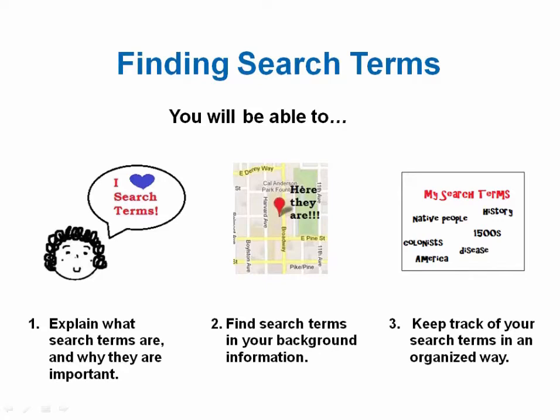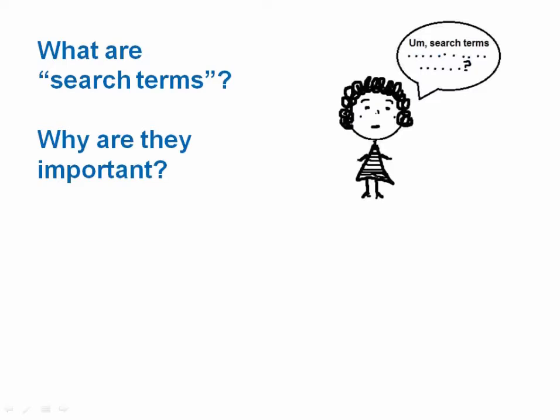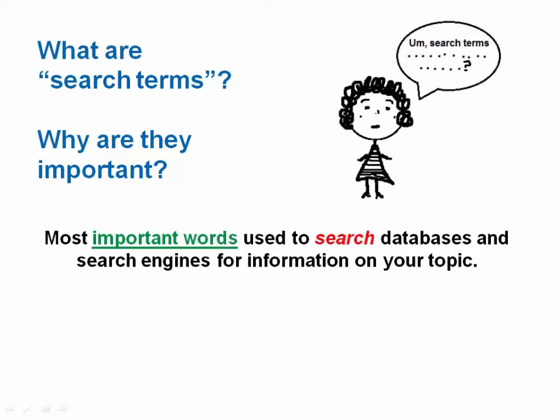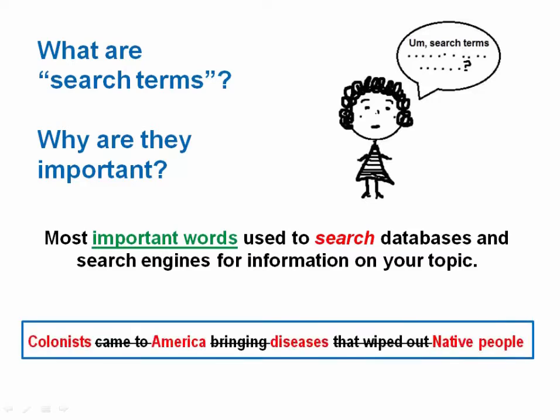For this tutorial, I'll call them search terms. You may be asking yourself, what are search terms anyways, and why do they matter? Search terms are the words you use to look for information in a database, including search engines like Google. They can really help shape your research, and the information you find or don't find. Search terms are the most important or meaningful words in your research topic. You can see in the sample statement, I crossed out the secondary words to get to the main words I'll use to search.